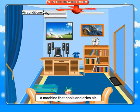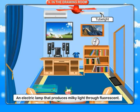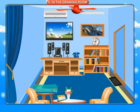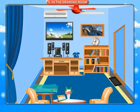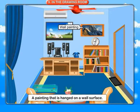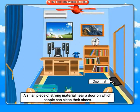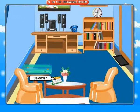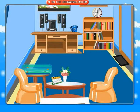Air conditioner: a machine that cools and dries air. Tube light: an electric lamp that produces light through fluorescence. Music system: a machine on which DVDs and CDs are run to display data. Wall painting: a painting that is hung on a wall surface. Door mat: a small piece of strong material near a door on which people can clean their shoes. Calendar: a page or series of pages showing the days, weeks and months of the year.